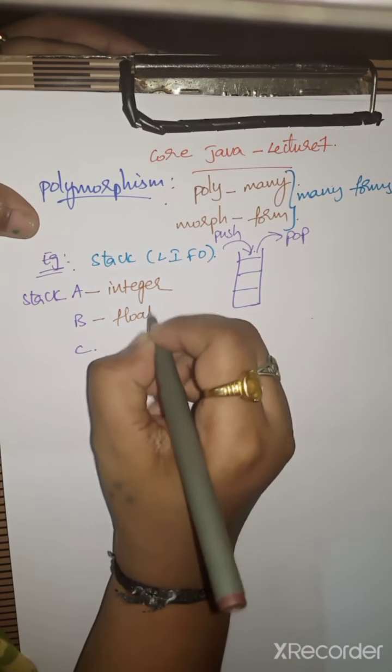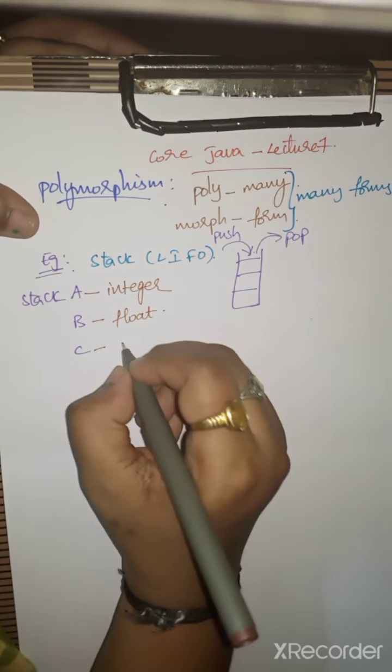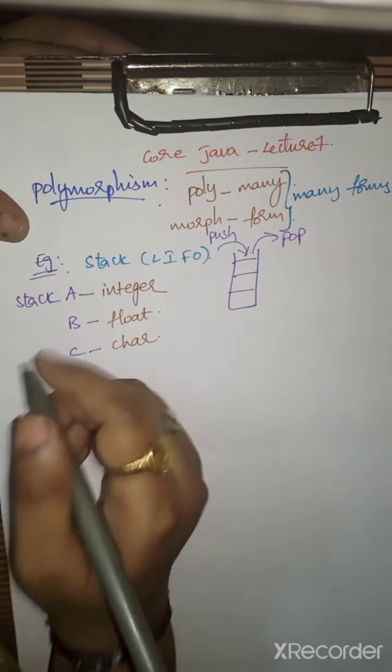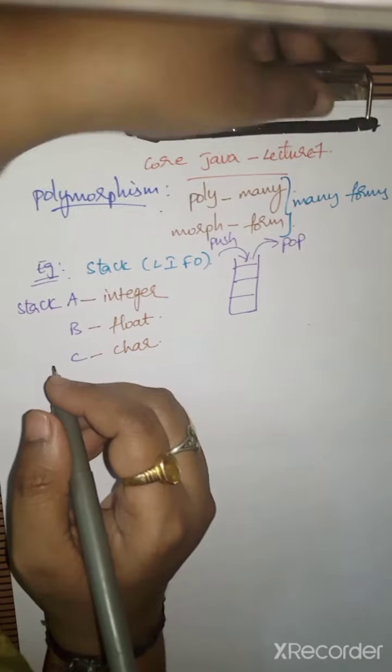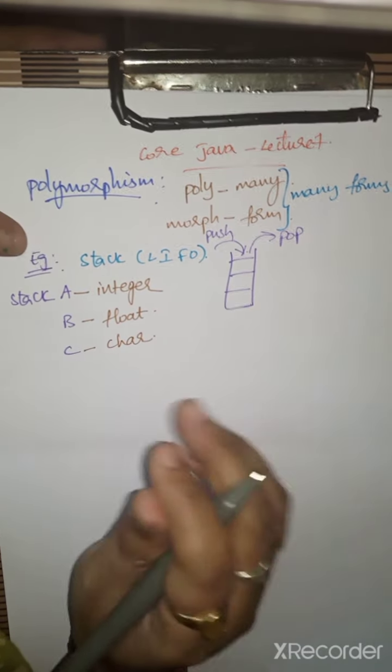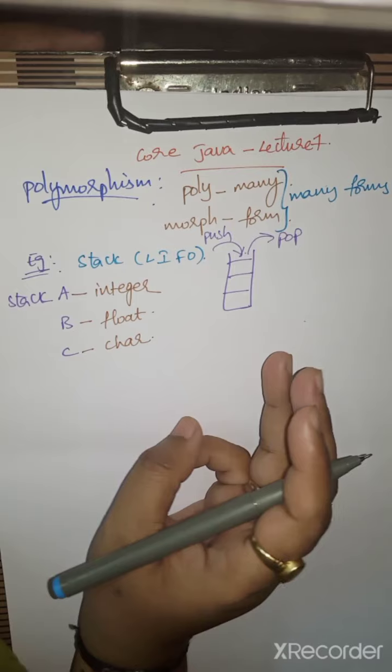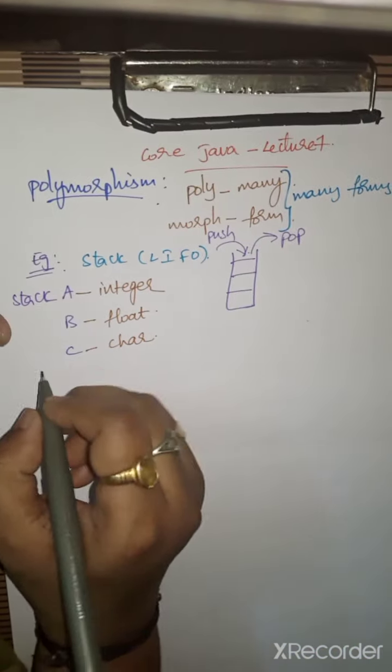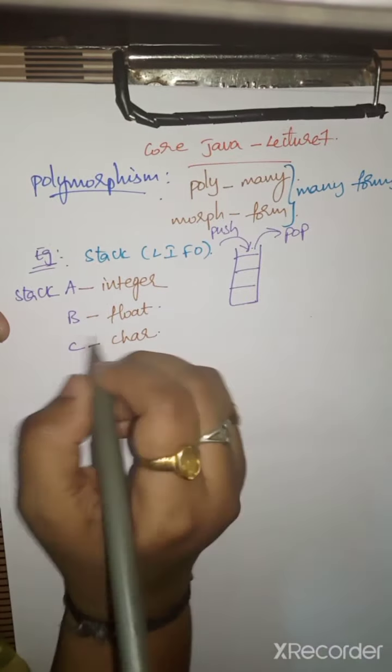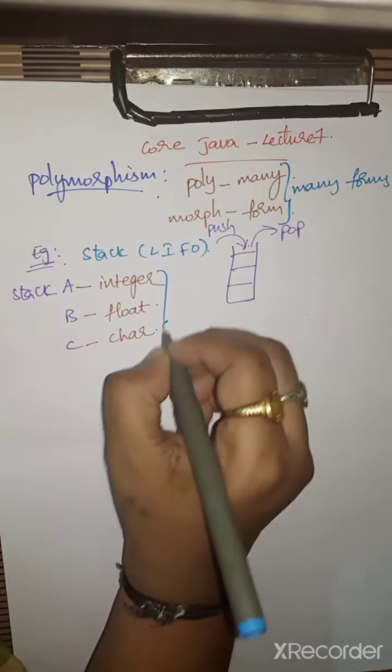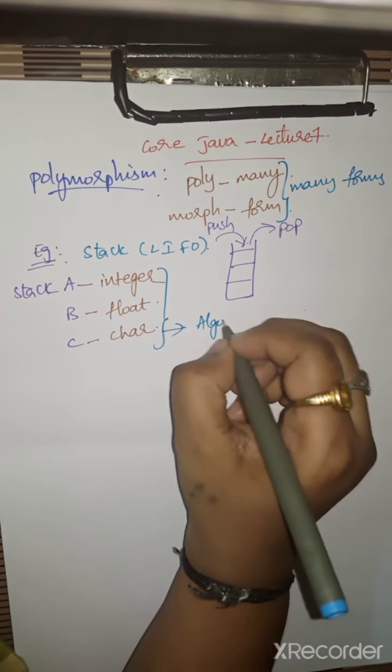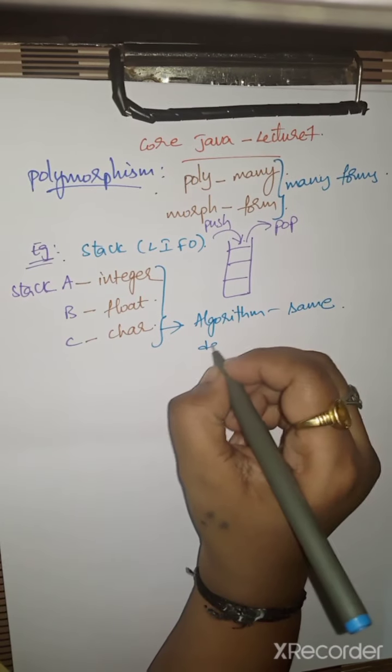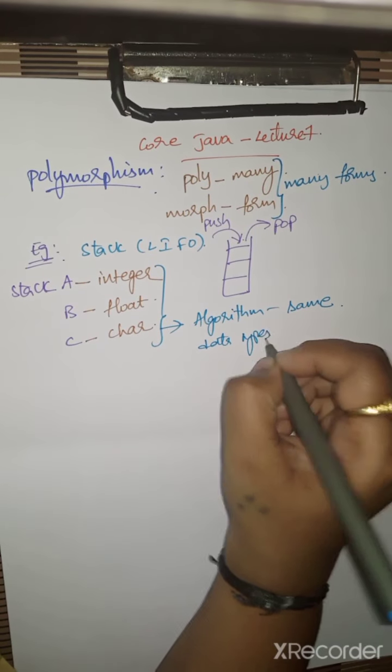Stack B holds floating point numbers and Stack C holds character values. If you are working with a non-object oriented language, we should write three different functions to handle these three stacks. The concept is the same for all three - the algorithm is the same, but data types are different.